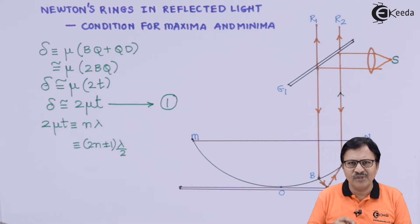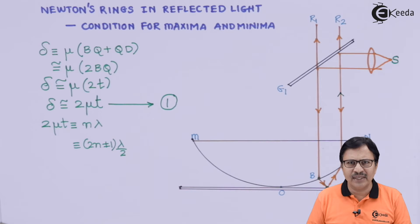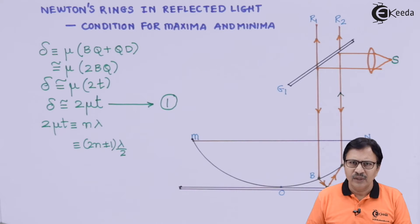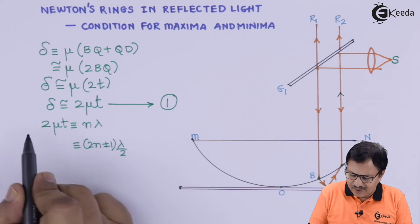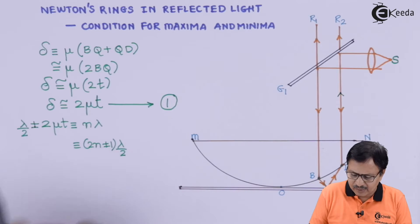Stokes' theorem states that whenever light is reflected from a denser medium, it undergoes a phase change of ±λ/2. In this case, we have a reflection at point Q from a denser medium, so there will be an additional path difference of ±λ/2.